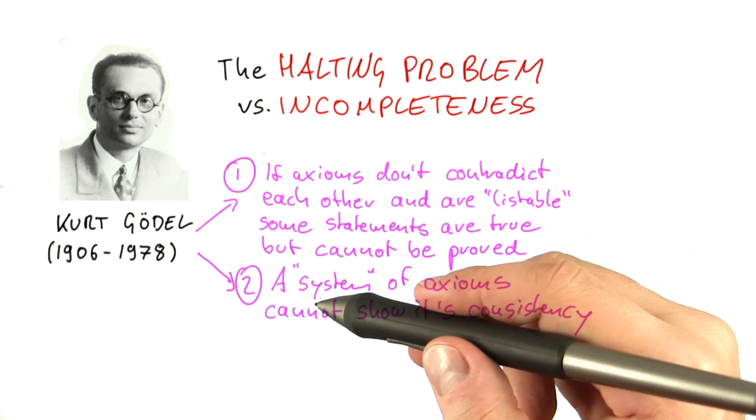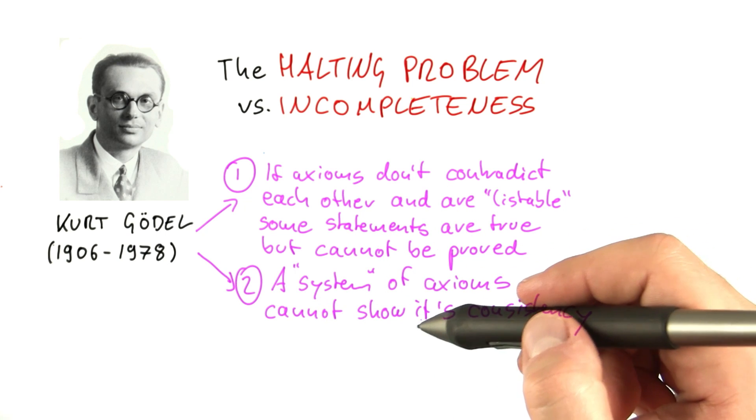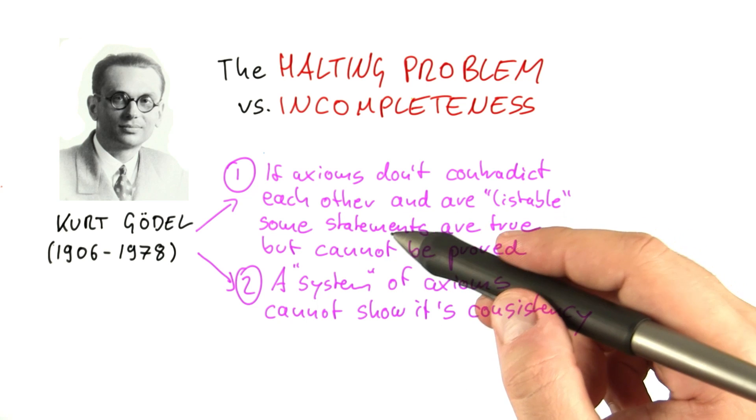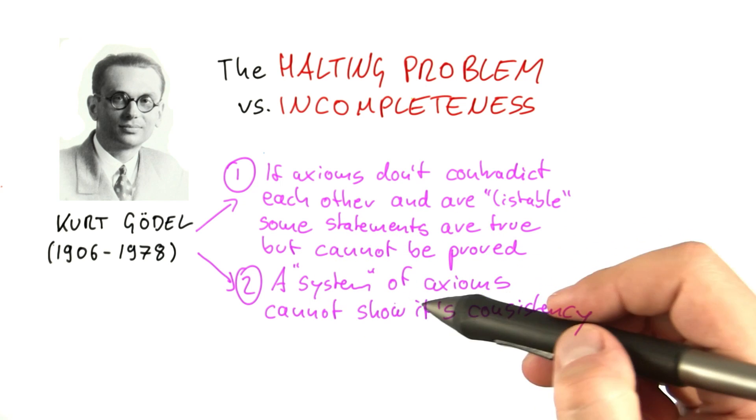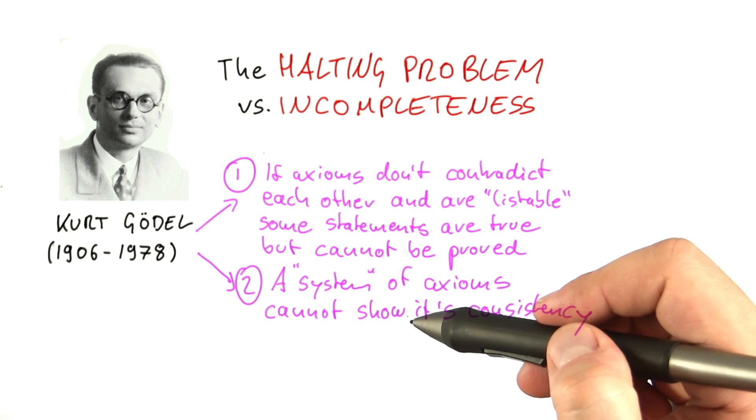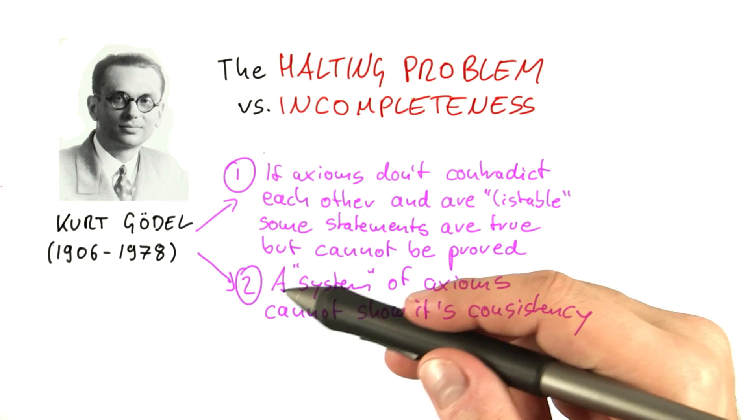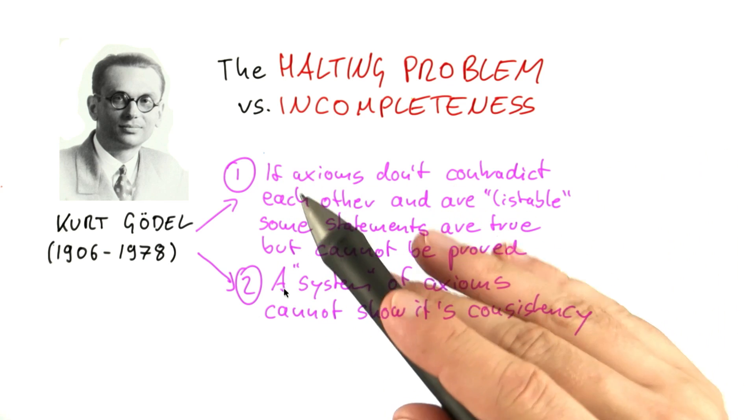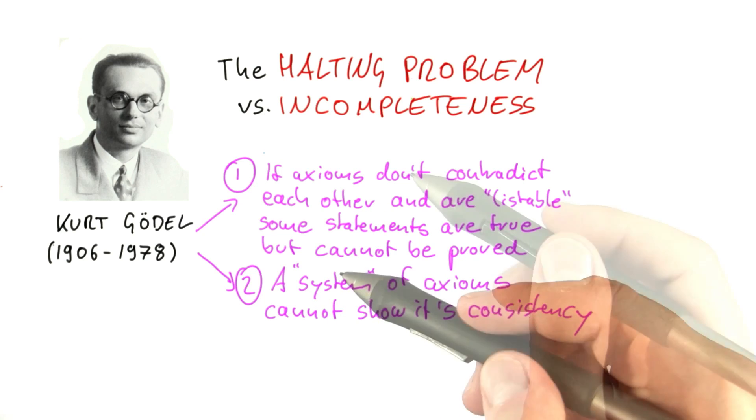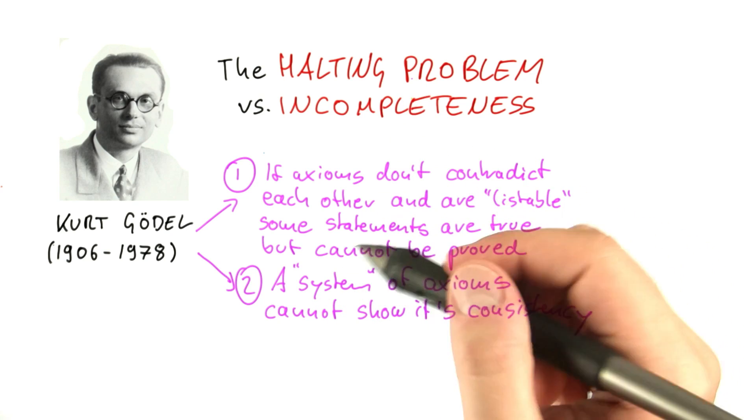And he also showed, and this is the second incompleteness theorem, which is basically an extension of the first one, that a system of axioms cannot demonstrate its own consistency. And what that means is that, very informally, a mathematical system cannot be used to show that it itself is consistent.